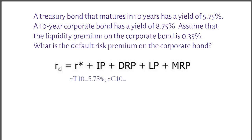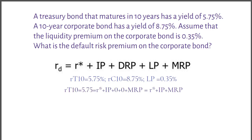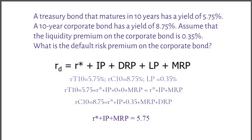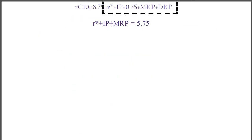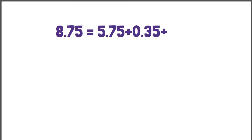Given: return for 10-year treasury bond equals 5.75%, return for 10-year corporate bond equals 8.75%, and liquidity premium equals 0.35%. For the 10-year treasury bond, the equation applies without DRP or LP. For the 10-year corporate bond, we substitute the value of R* plus IP plus MRP equals 5.75 and get 8.75 equals 5.75 plus 0.35 plus DRP.